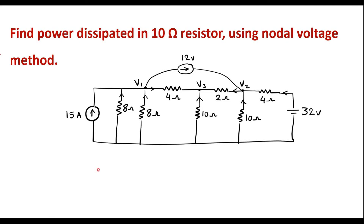In this video I will take one numerical on node analysis. Find power dissipated in 10 ohm resistor using nodal voltage method. This is the given circuit. We are supposed to calculate power dissipated in this 10 ohm resistor using node analysis method or node voltage method.